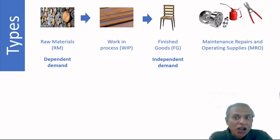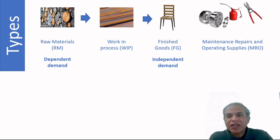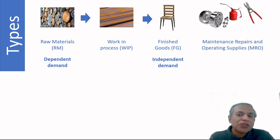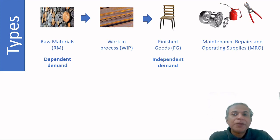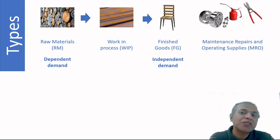Another classification method distinguishes independent from dependent demand. In a make-to-stock company selling chairs, the demand for chairs is independent demand, while the raw material demand is dependent. For example, if you forecast demand for 400 cars, you can calculate a need for 500 tires. Finished goods inventory must be based on a forecast, while raw material inventory should be based on a calculation — you don't forecast tire requirements, you calculate them.